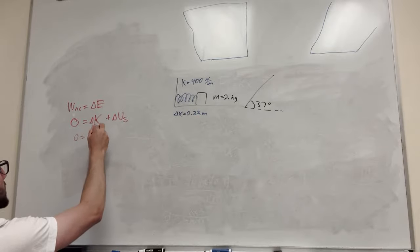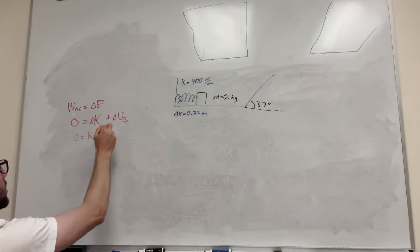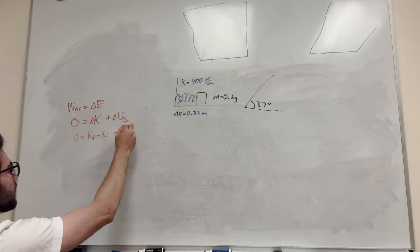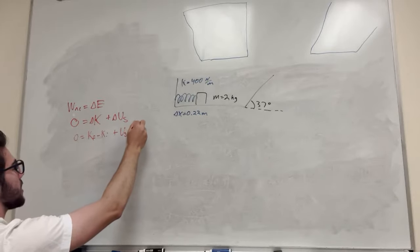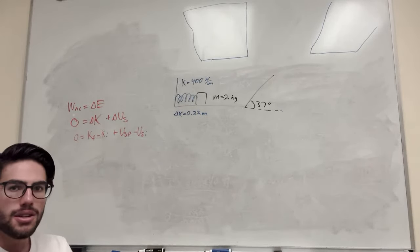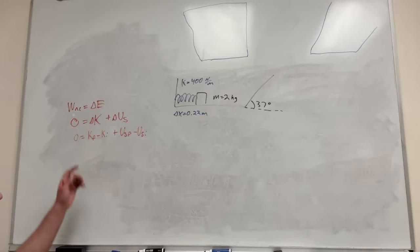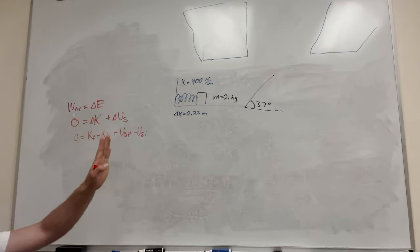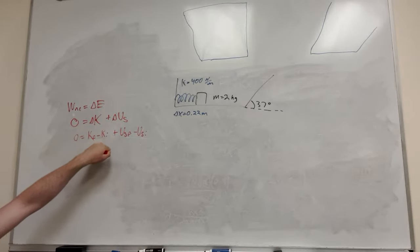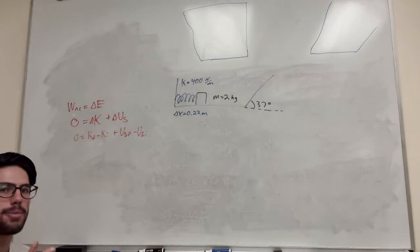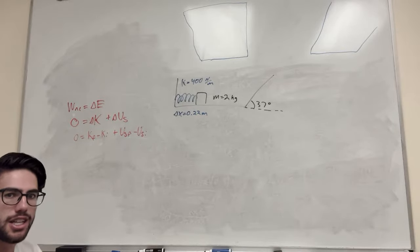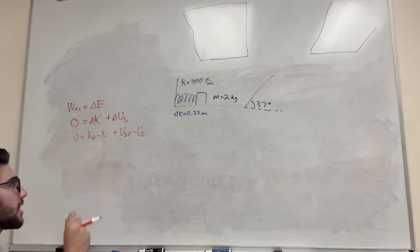So this is going to be K-final minus K-initial — that's the definition of delta K — and then U-spring-final minus U-spring-initial. Our kinetic energy final is how fast it's going after it leaves the spring. But kinetic energy initial: it's held in a static position at the beginning, being held against the spring, so it has no kinetic energy there. So K-initial is equal to zero.